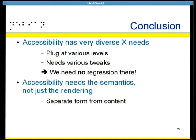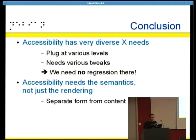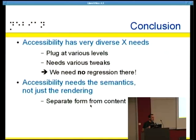To conclude: accessibility has a lot of various needs you wouldn't even think about. It plugs at various levels in the stack and needs various tweaks — we've seen some for the keyboard. With Wayland, we need no regression because people will not be able to use their computer at all if they can't press keys. Accessibility doesn't only need rendering but also semantics — separate form from content so screen readers can access the content and its logic, with separate form for the screen and for the screen reader.